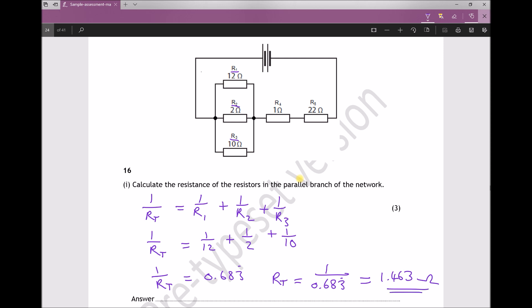So what this is telling us then is that we can replace those three resistors with a single resistor and that single resistor will have a resistance of 1.463 ohms. In fact I'm going to modify the diagram to show you what I mean.